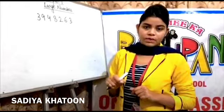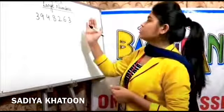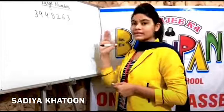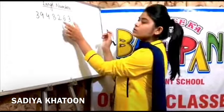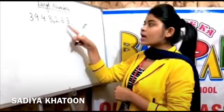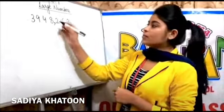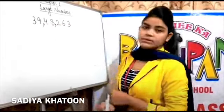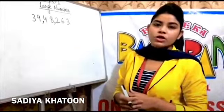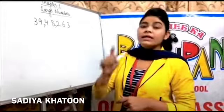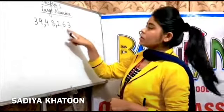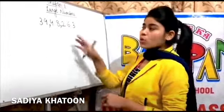The first topic is putting commas and then writing the name of the number. Whenever we put commas, we count the numbers from the right-hand side. Count three digits from the right and put a comma. The next comma is placed after counting only two digits. This is the rule in the Indian place value system. In the starting exercises, keep in mind the Indian place value system: count three digits from the right, then two, then two.